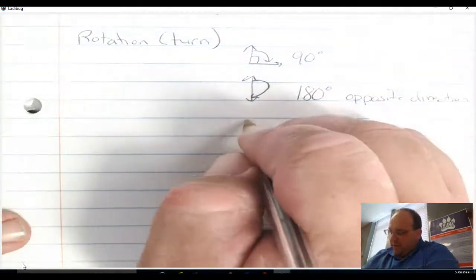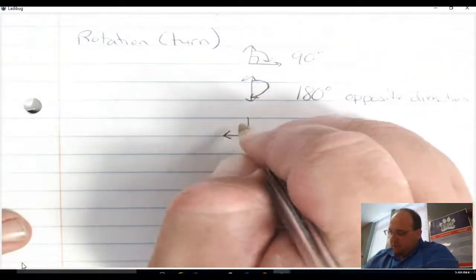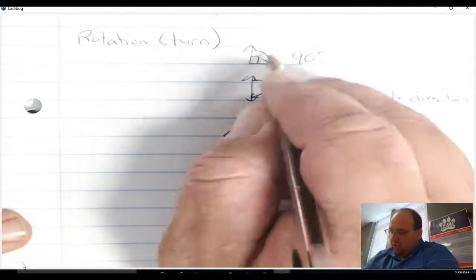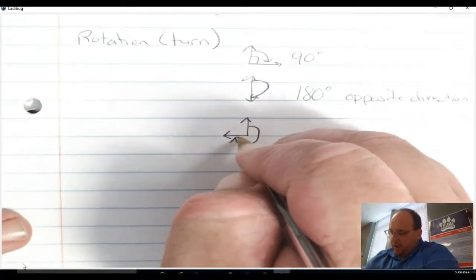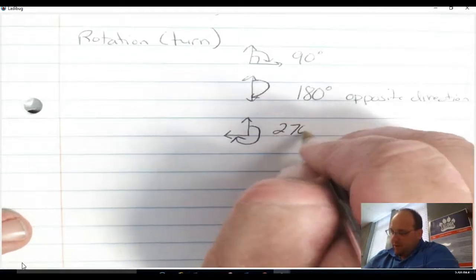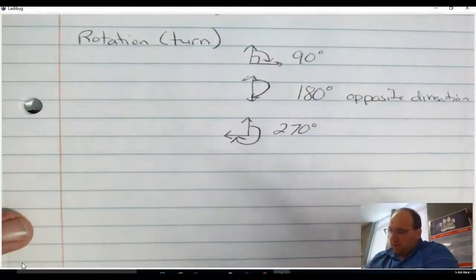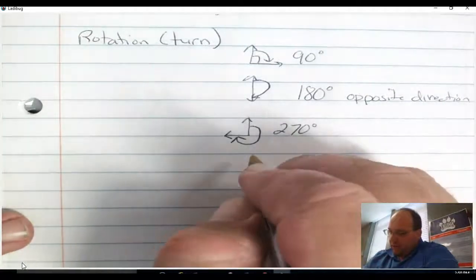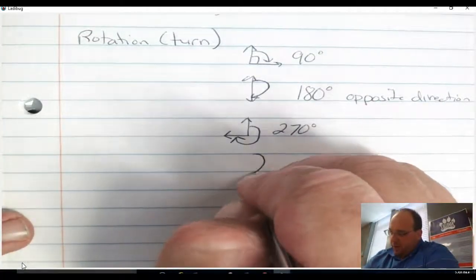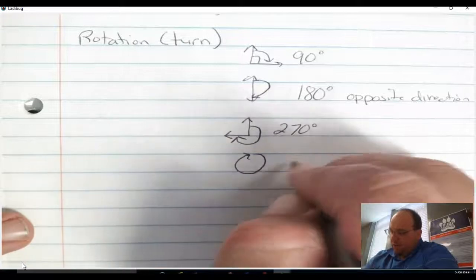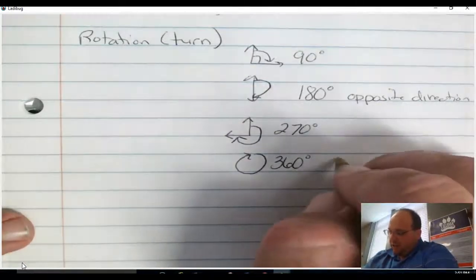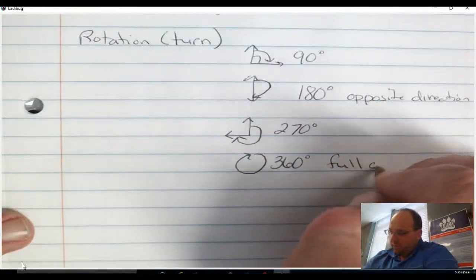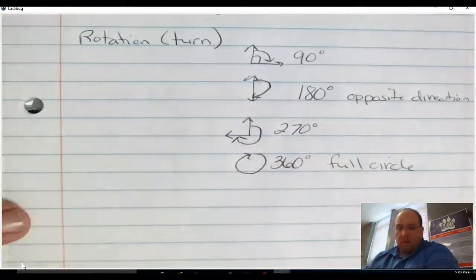The next type of rotation is what we call a 270. It looks similar to a 90, except it's this whole area right here. It's a little less than a full rotation. And then our full rotation, if we go around in a complete circle, this is called a 360-degree rotation. So it's a full circle. Basically, you end up where you started.